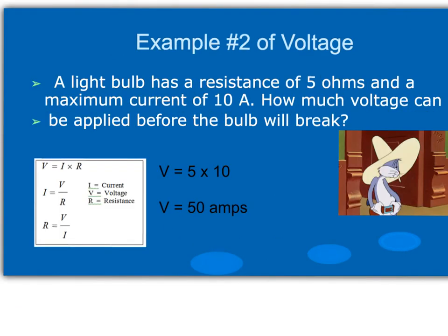Let's do one more problem. A light bulb has a resistance of 5 ohms and a maximum current of 10 amps. How much voltage can be applied before the bulb breaks? Voltage equals current times resistance: 10 amps times 5 ohms gives us 50 volts before the bulb breaks.